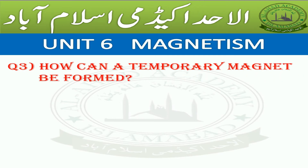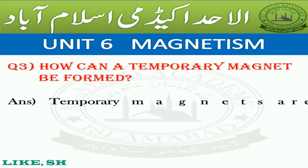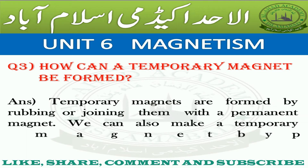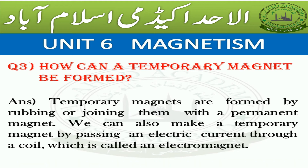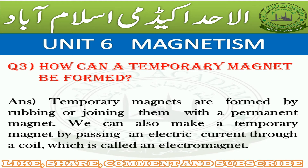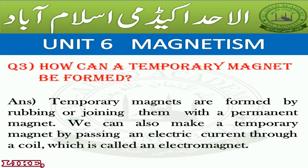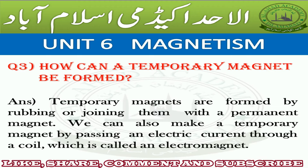Question Number 3: How can a temporary magnet be formed? Answer: Temporary magnets are formed by rubbing or joining them with a permanent magnet. We can also make a temporary magnet by passing an electric current through a coil, which is called an electromagnet.